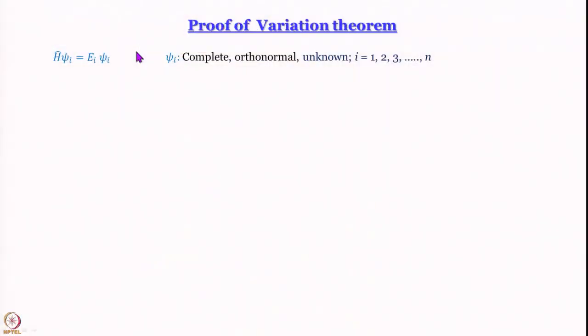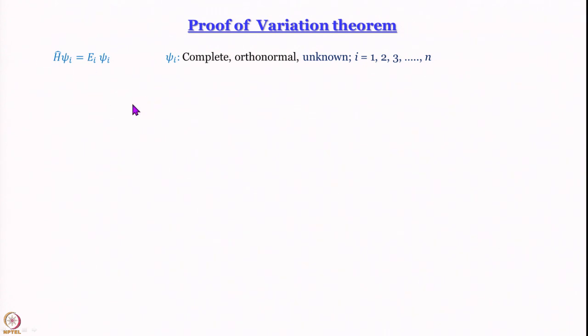Now that we have illustrated that the upper limit theorem works for the hydrogen atom, let us move to a formal proof of the theorem. We write a Schrödinger equation for an arbitrary system. Let ψᵢ constitute a complete orthonormal set of unknown wave functions, indexed by i, which I use to avoid confusion with n as an index.